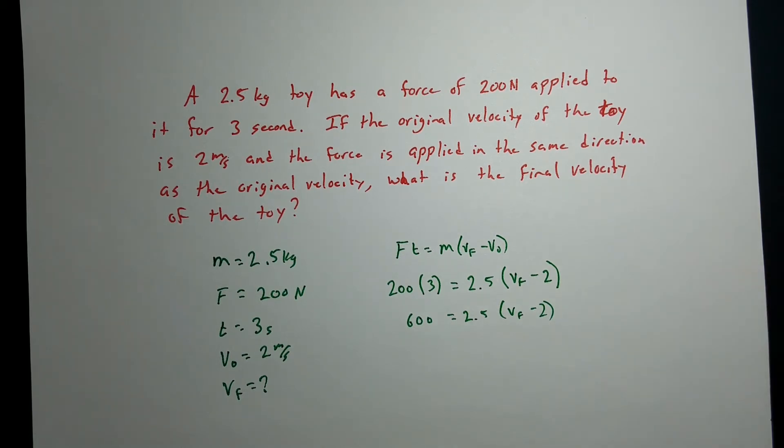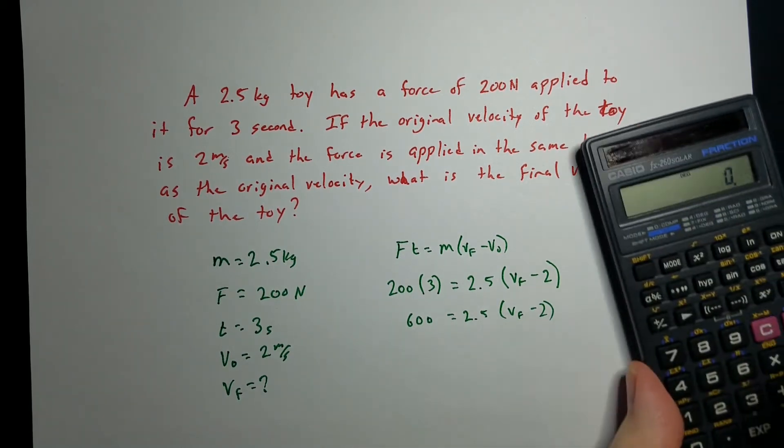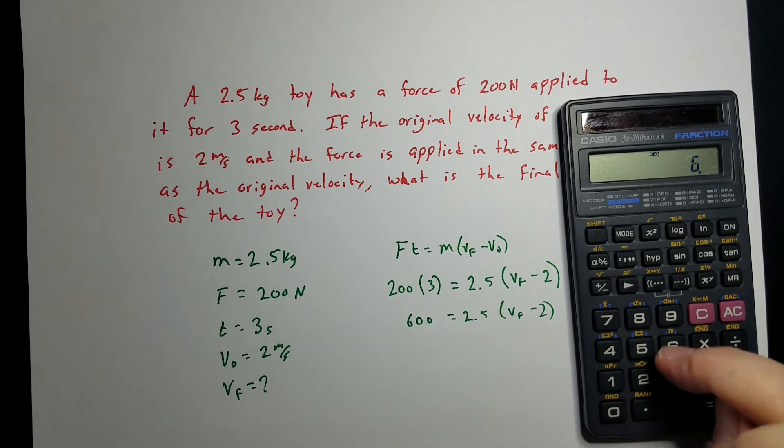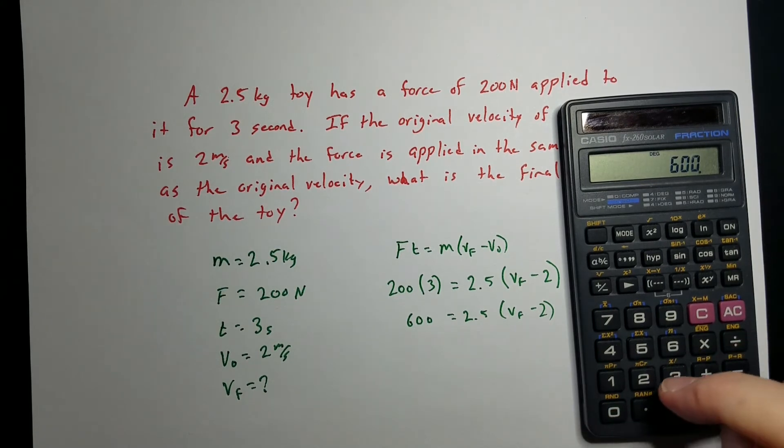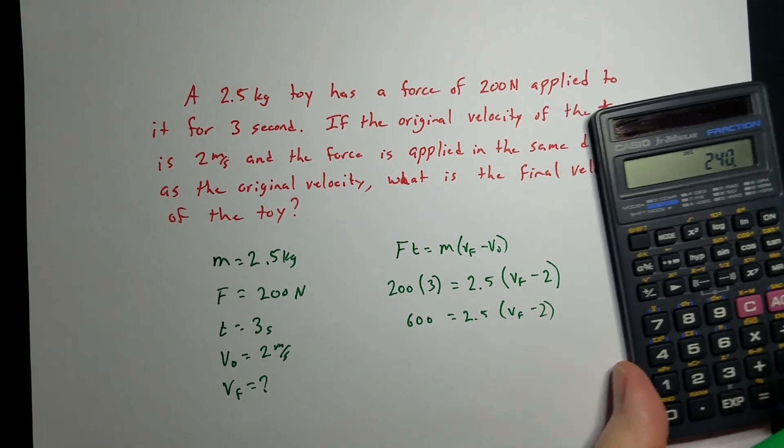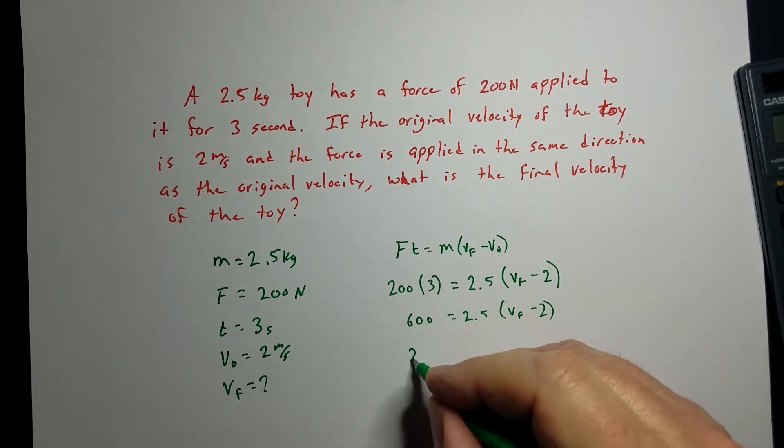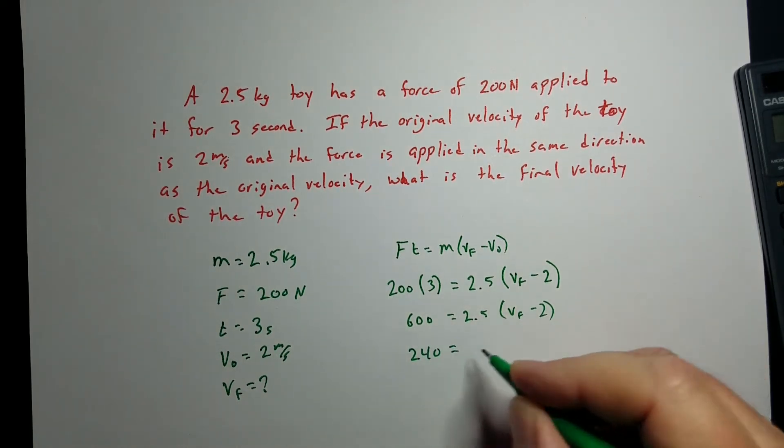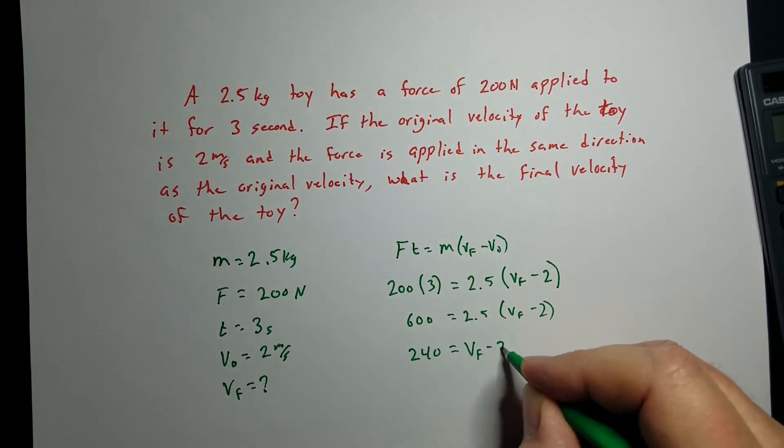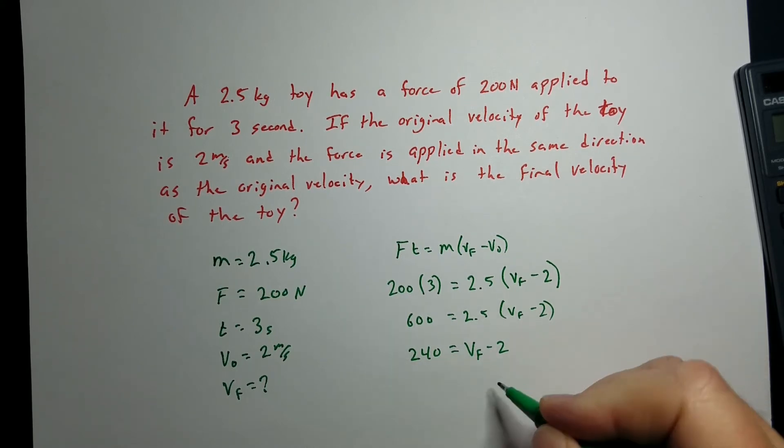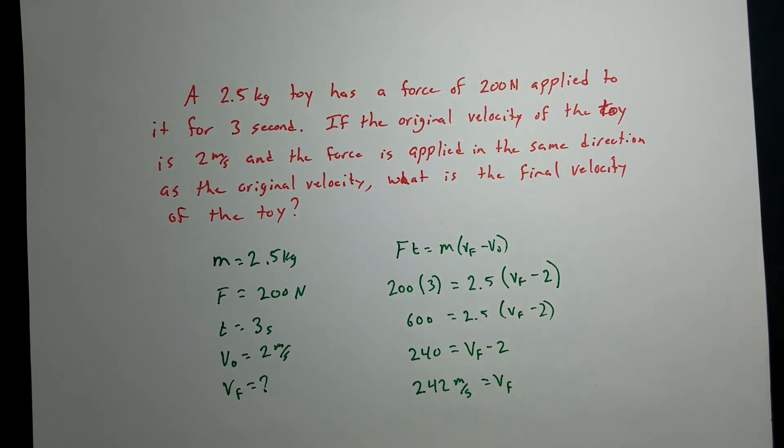Now, if you want to, you can go ahead and distribute this. But I would find it much easier just to go ahead and take that 600 and divide by the 2.5. We get 240. And that would leave Vf minus 2 over on this side. Now, we just add 2 to both sides. So, we've got 242 meters per second is the final velocity, which is really quite huge.